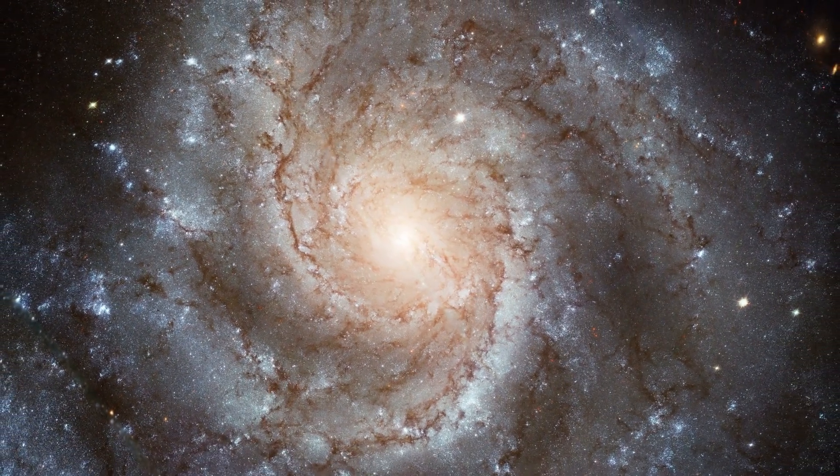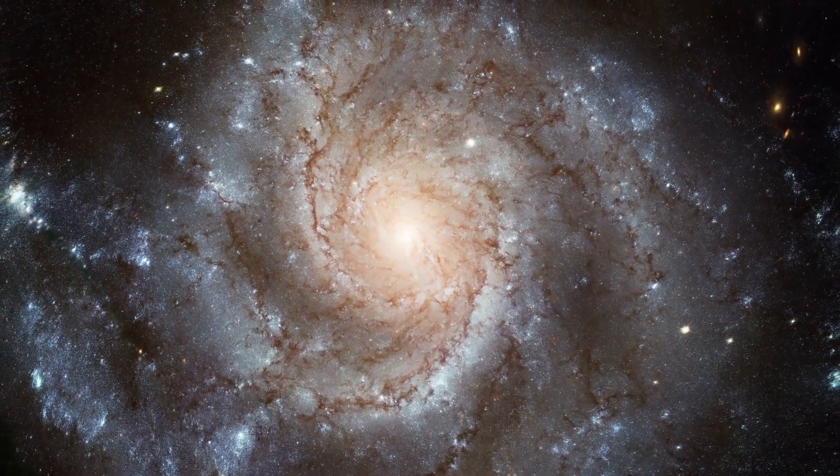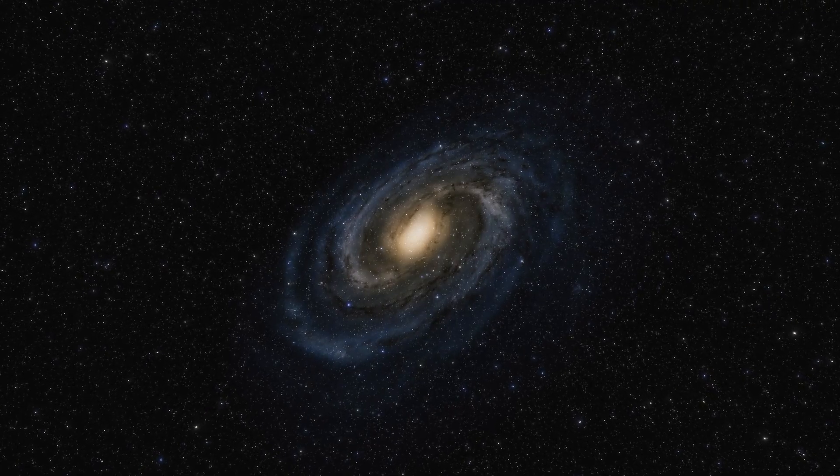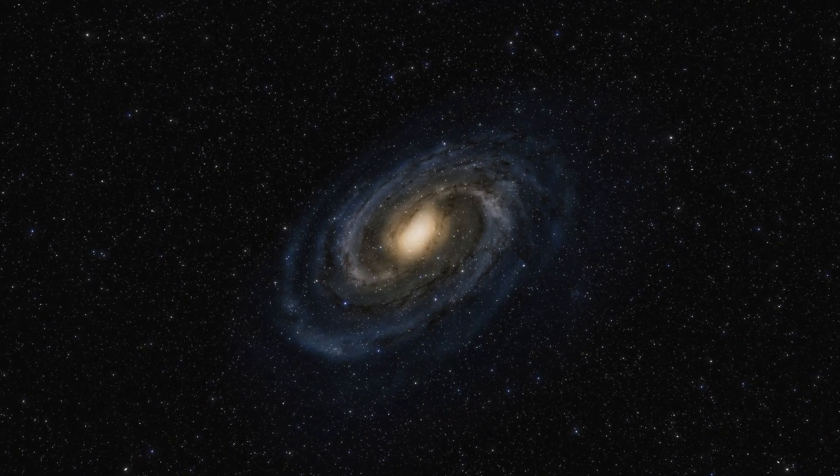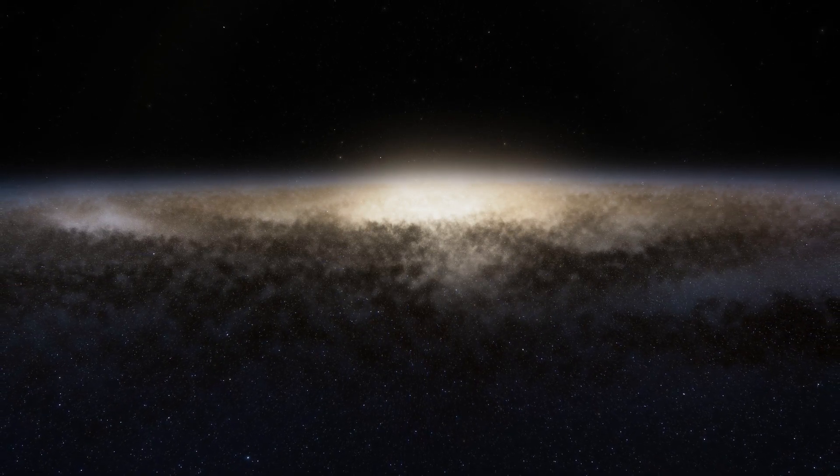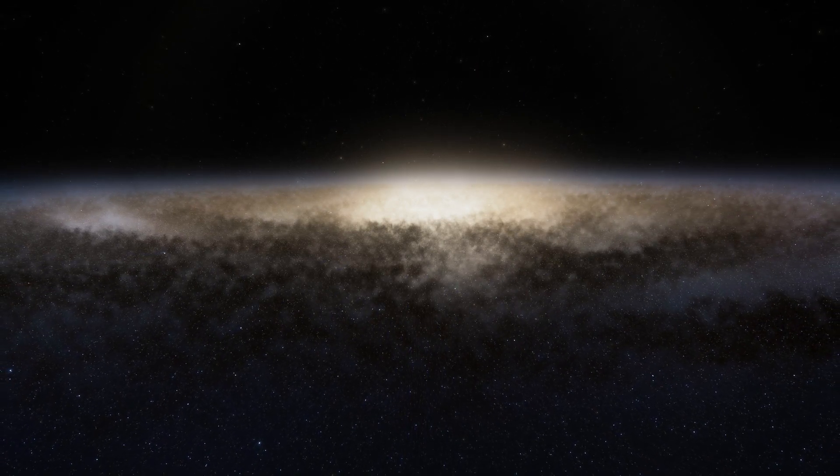The Milky Way took billions of years to develop into a disk galaxy with distinct spiral arms. Finding a double at such an early stage of the universe is unexpected. Previous theories assumed that disk galaxies like the Milky Way were formed much later in cosmic history.